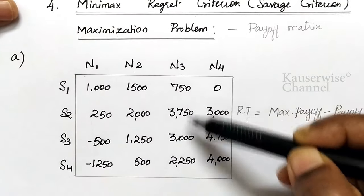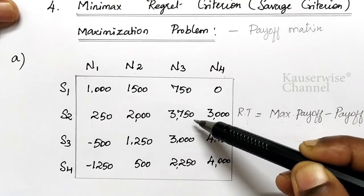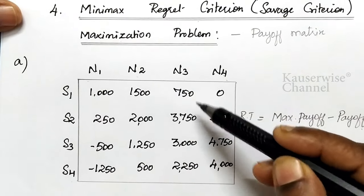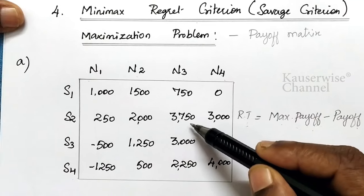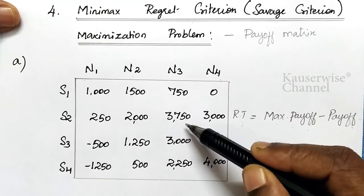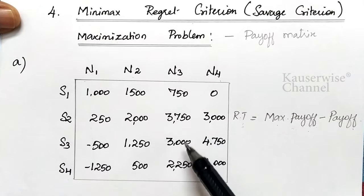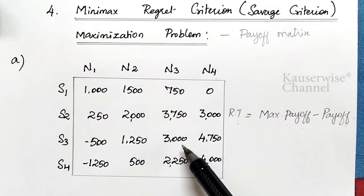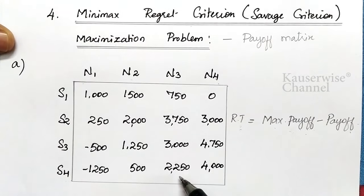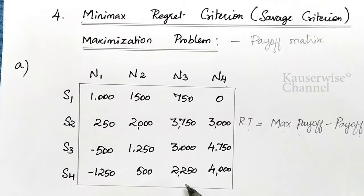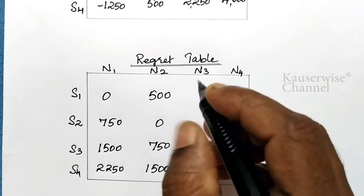For the third event, the highest value is 3750. So: 3750 minus 750 equals 3000; 3750 minus 3750 equals 0; 3750 minus 3000 equals 750; 3750 minus 2250 equals 1500. Enter these values in the regret table.